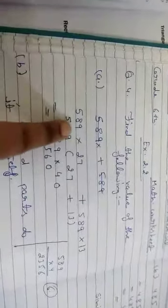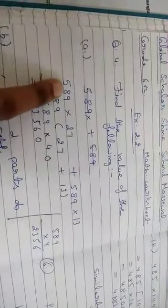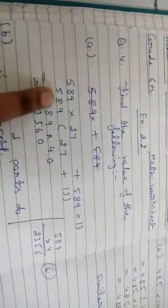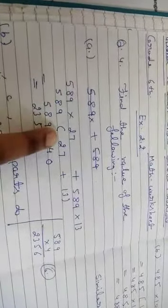Question number fourth is 589 into 27 and 589 into 13. If we look at this, we have two common numbers, 589. We will write it out with 27 and 13, putting a plus sign between them. We will add 27 and 13 to get 40, then multiply 589 by 40. In this way, we will answer parts B, C, D and E.